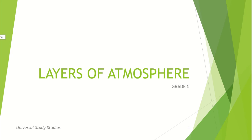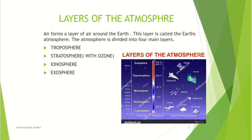Layers of the atmosphere: air forms a layer around the earth, and this layer is called the earth's atmosphere. The atmosphere is divided into four main layers: the troposphere, the stratosphere (which contains the ozone layer), the ionosphere, and the exosphere.